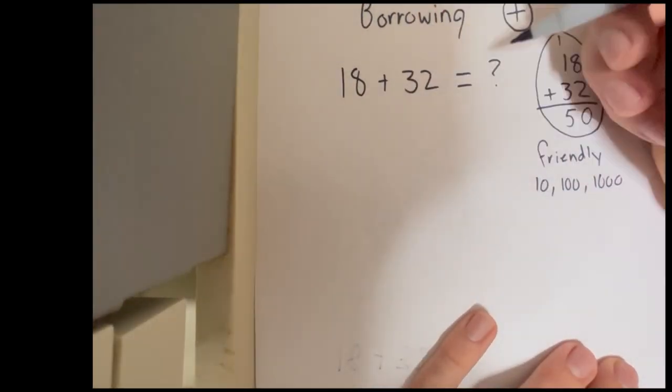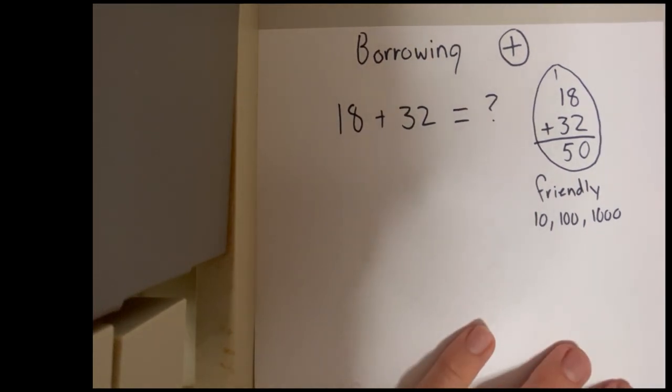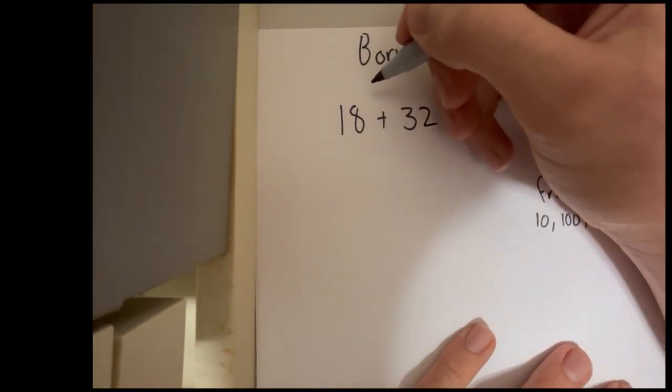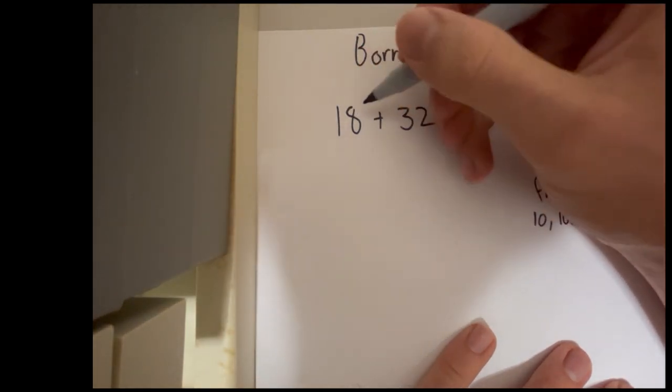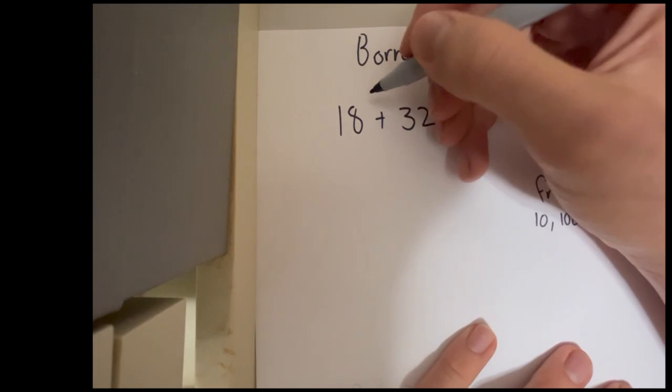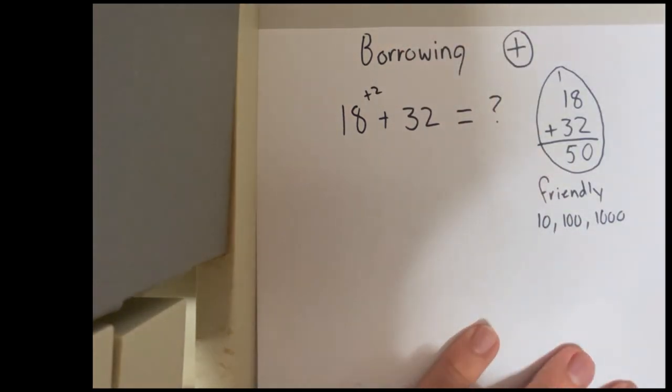And to get 18 to the next friendly number, the next number that will end in a 0, it needs how many more? Well, it needs 2 more. So for 18 to get to the next 0 number, which will be 20, we need to plus 2 onto 18.